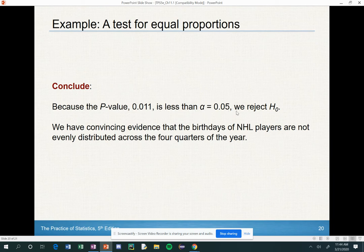We have convincing evidence that the birthdays of NHL players are not evenly distributed across the four quarters of the year. So that book's theory of people born in the earlier months of the year versus players born in the later months of the year, that holds true here.